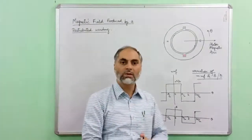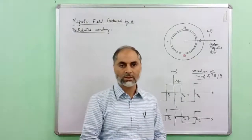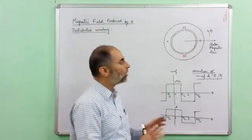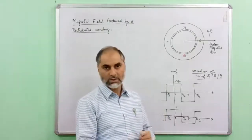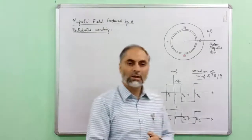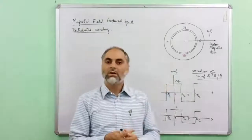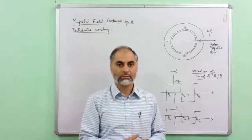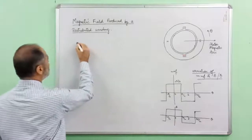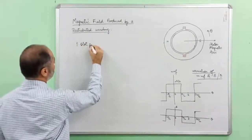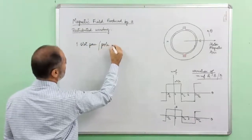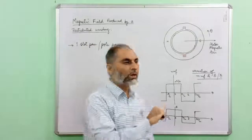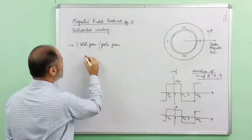In the last class we also discussed how four poles can be created on the stator. For producing four poles we need two coils accommodated in two slot pairs, and similarly for six poles we require at least three coils accommodated in three slot pairs. In all these cases we use one slot pair per pole pair, and such a winding is known as concentrated winding.